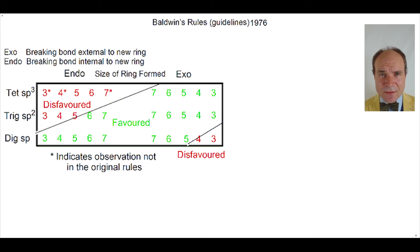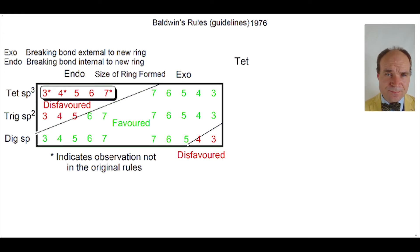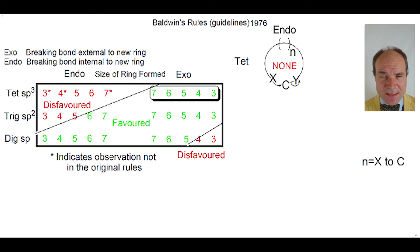Let's go through the table and look at some examples here. Firstly, I'd like to consider tet endo. So tet endo by Baldwin's Rules is not possible. It is unfavoured. Next, we're going to look at tet exo.